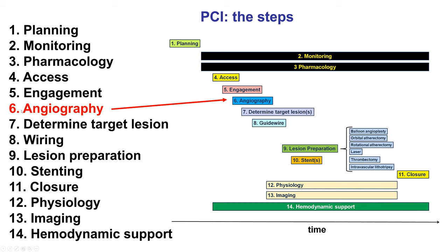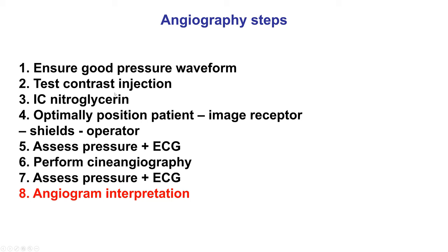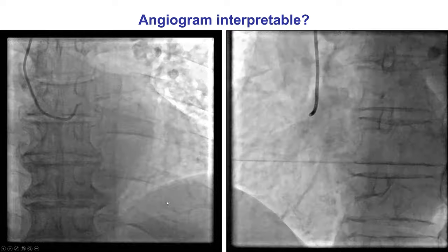Coronary angiography is the sixth of the 14 steps of percutaneous coronary intervention and is performed after engagement of the catheter is achieved. There are eight steps to performing the angiogram. Steps 1 through 7, which have to do with obtaining the images, were discussed in detail in video 6.1. In this video, we'll discuss specifically how to interpret the coronary angiogram.